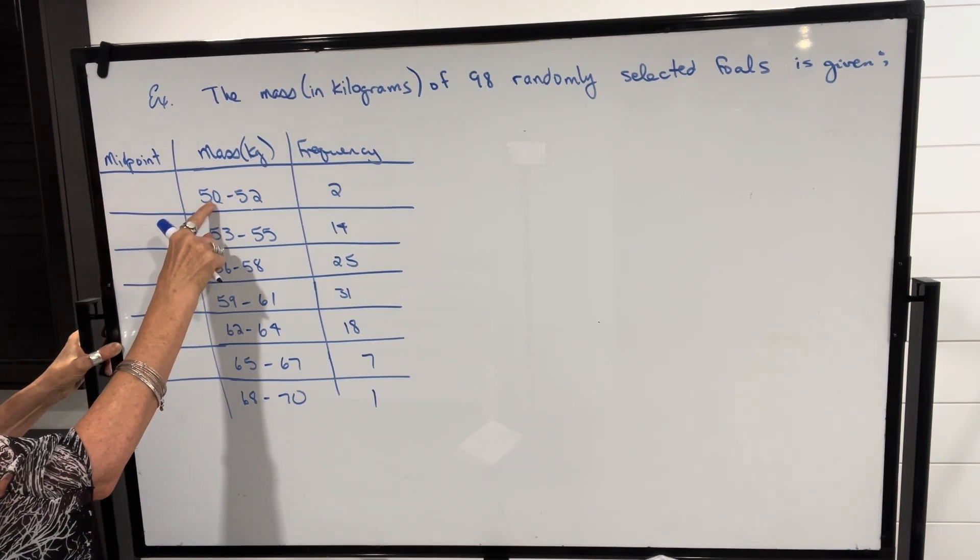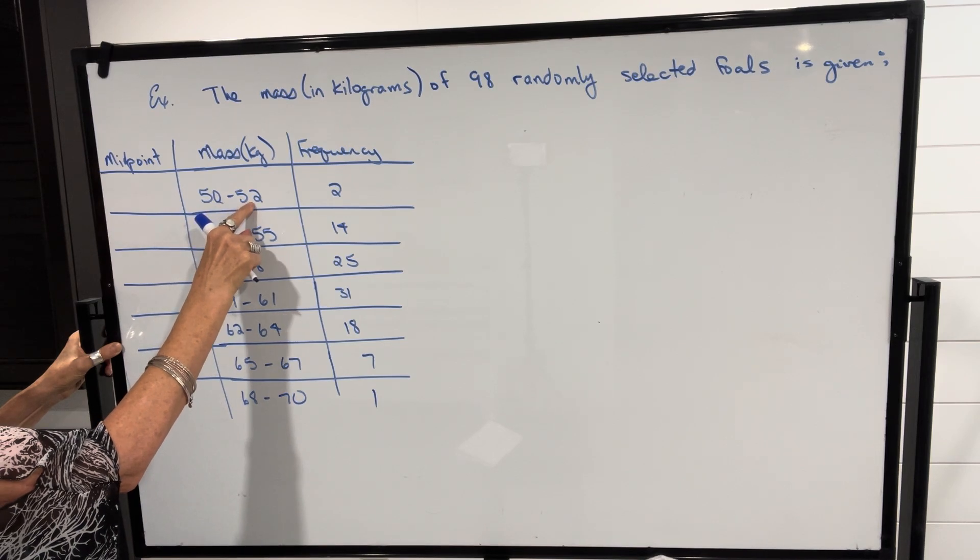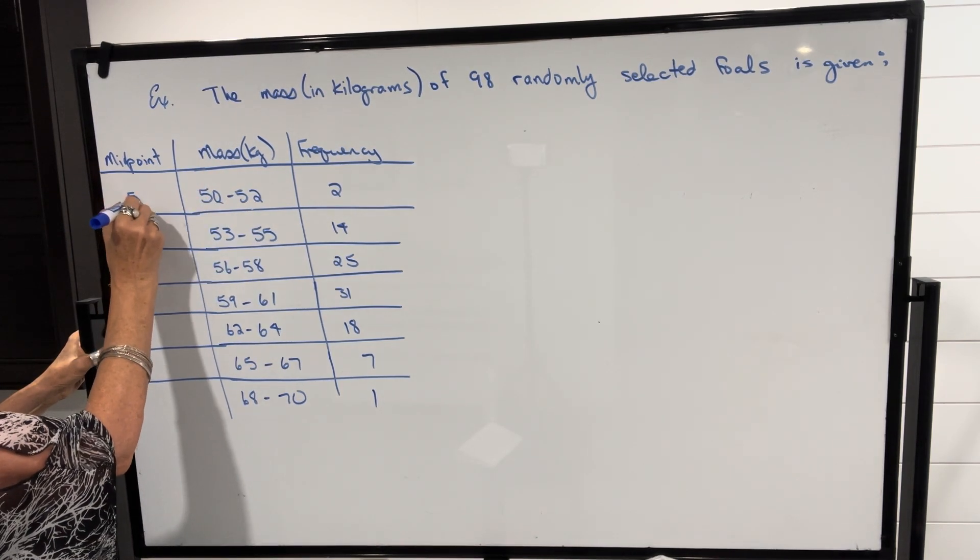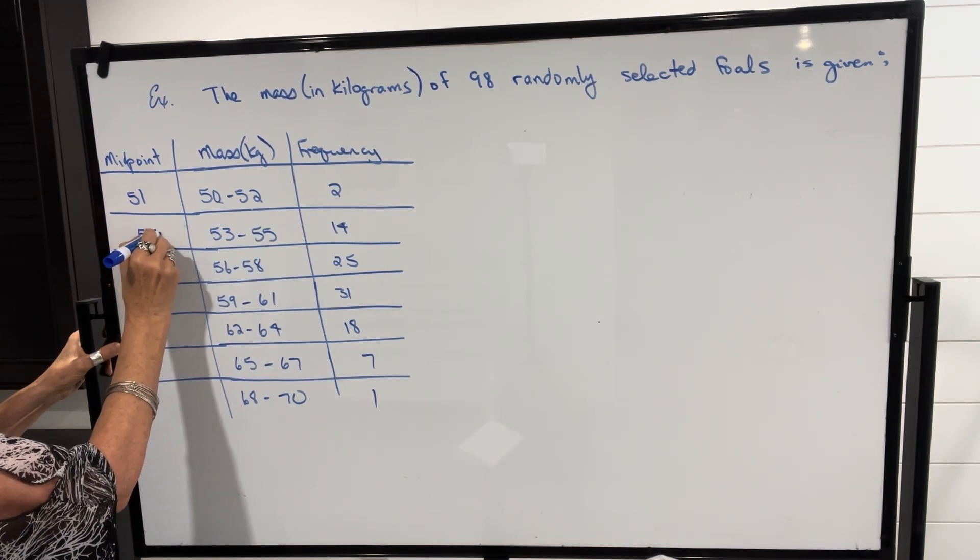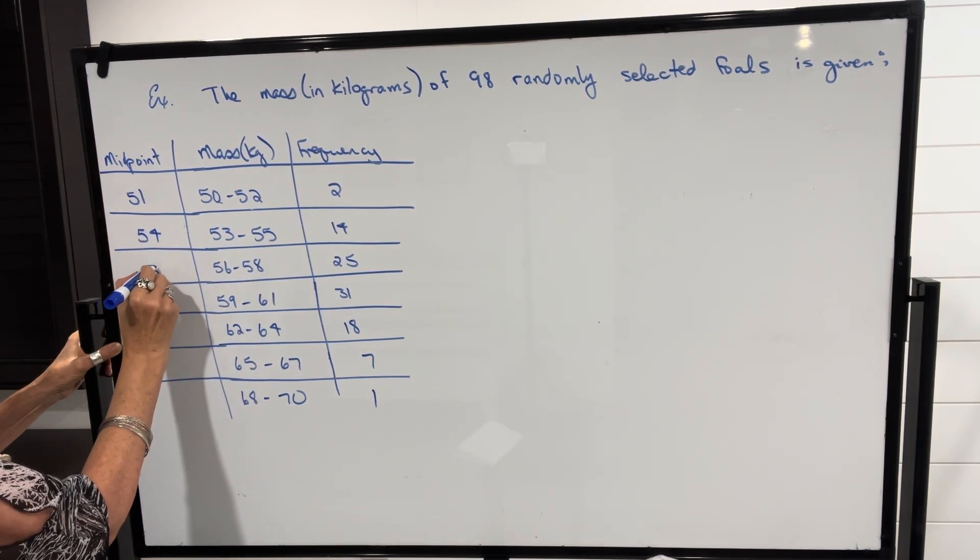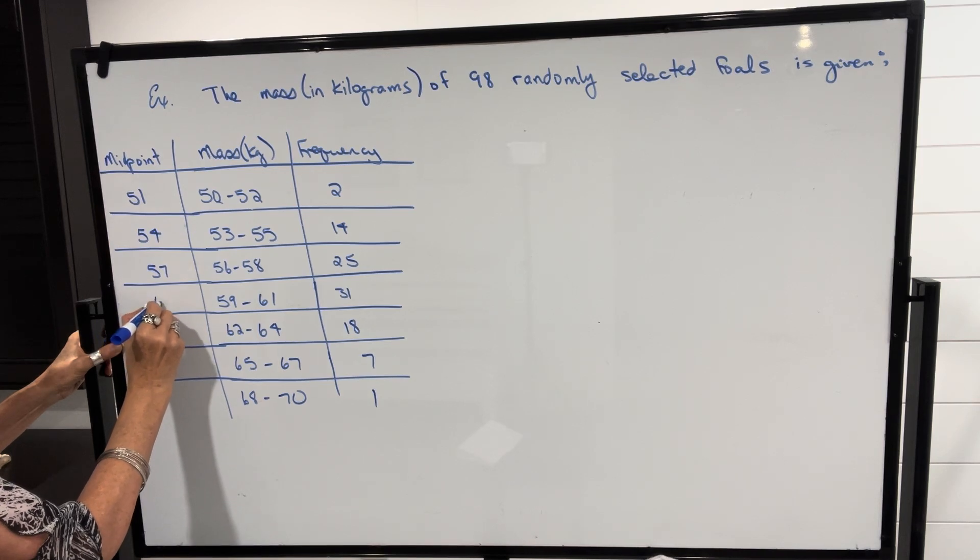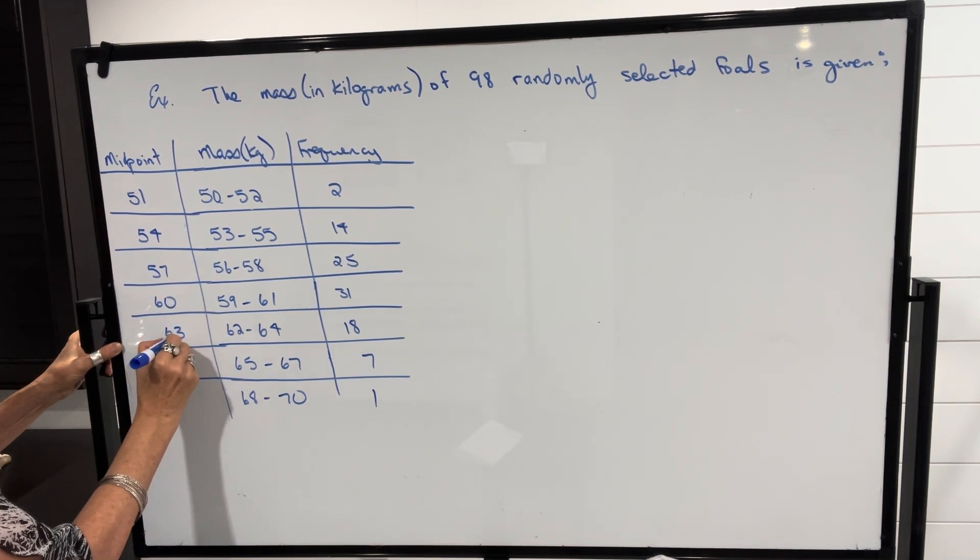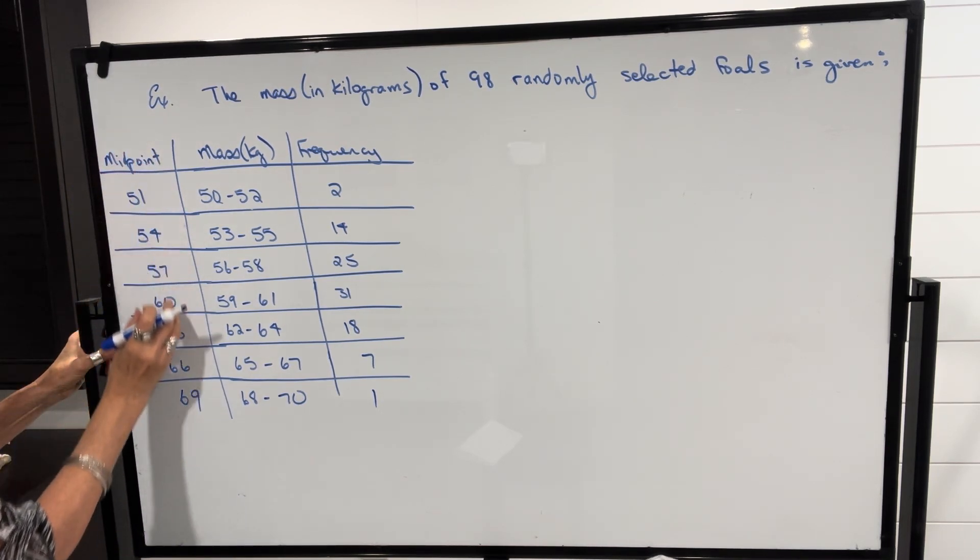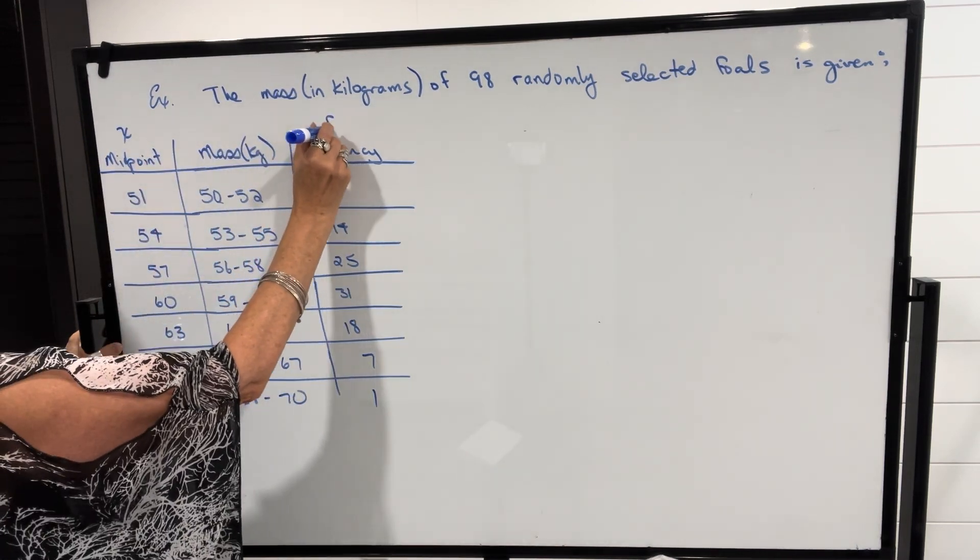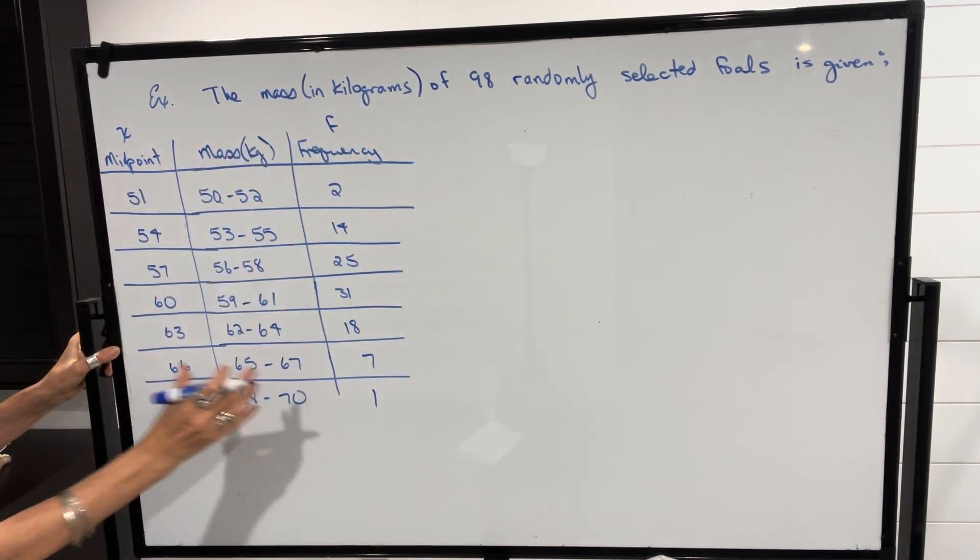So I'm just going to do that here. In order to find the midpoint, we just add them up and divide by 2 or look to see what the middle number is. In this case it's 51. Add them up and divide by 2, the middle number is 54 and so on.